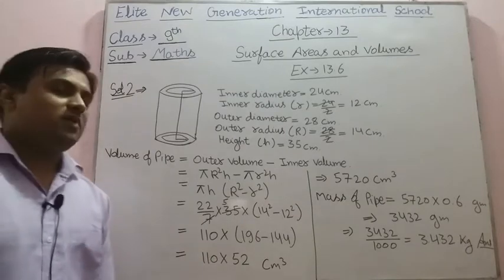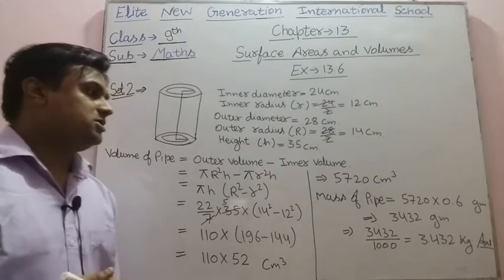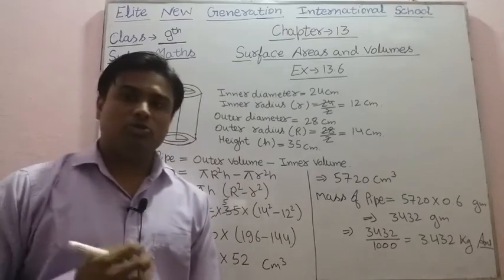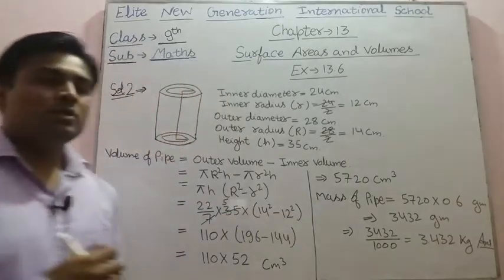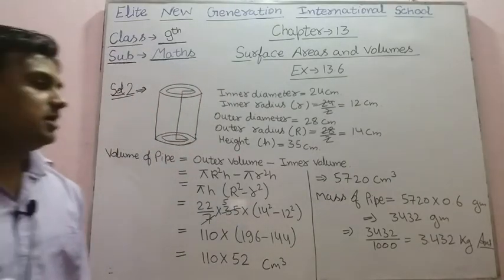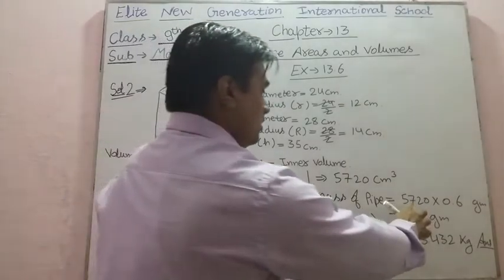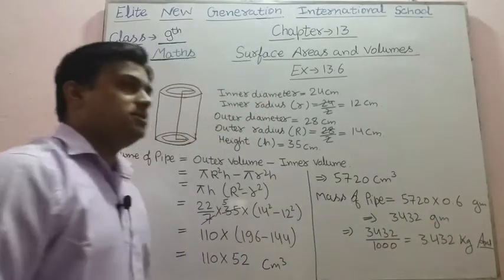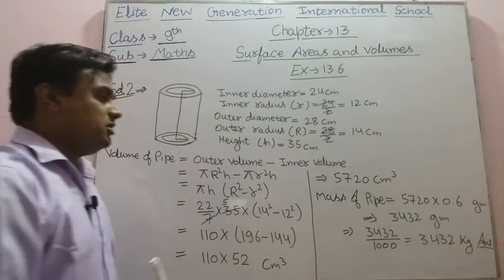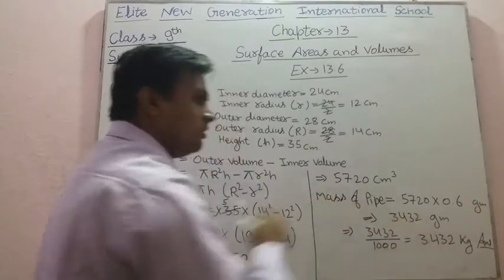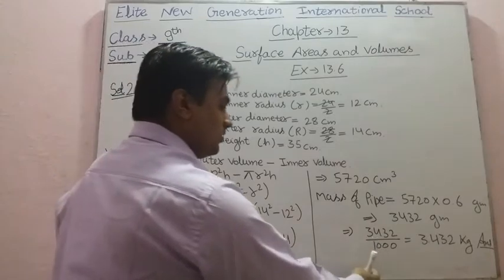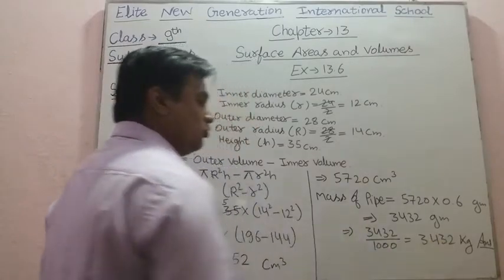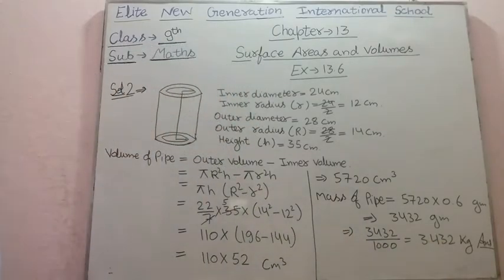Now we have to find the mass of the pipe. It is given that 1 centimeter cube of wood has a mass of 0.6 gram. So mass = 5720 × 0.6 = 3432 gram. Converting to kilogram by dividing by 1000, the mass will be 3.432 kg. So 3.432 kg is the answer.